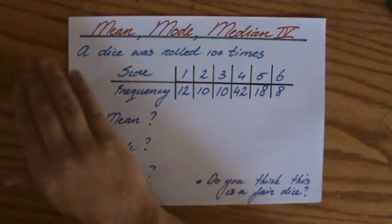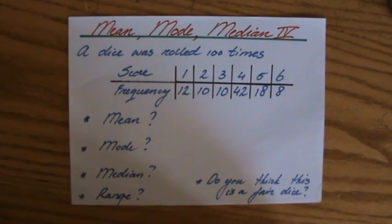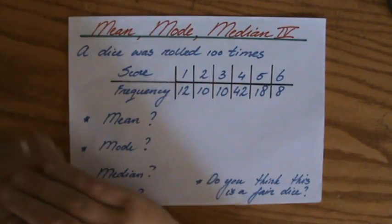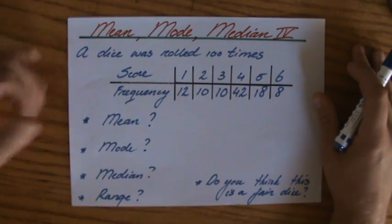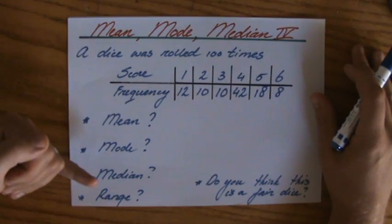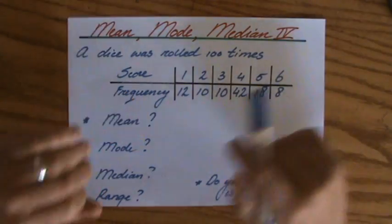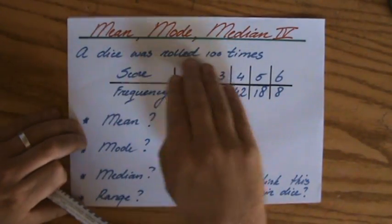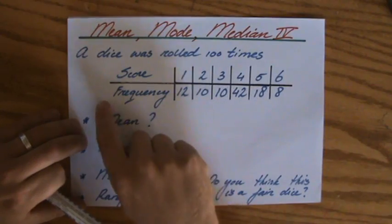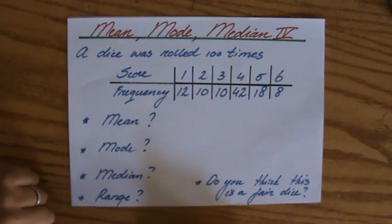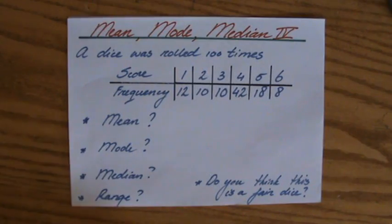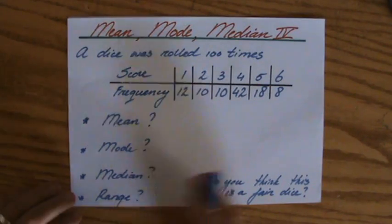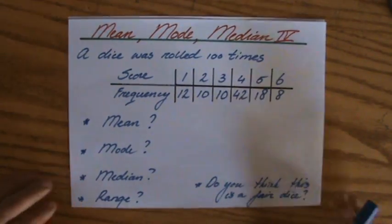We are here to continue talking about mean, mode, and median, but now we're going to look at some frequency tables. We're going to calculate the mean, mode, median, and range. A dice was rolled a hundred times and we have the frequency table. What is the mean? What is the mode? What is the median and the range? And in the end, do you think it's a fair dice?